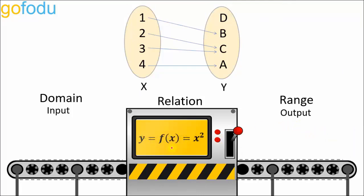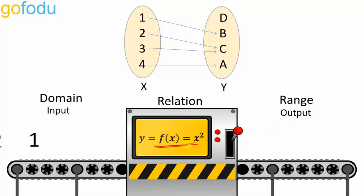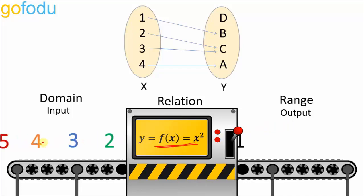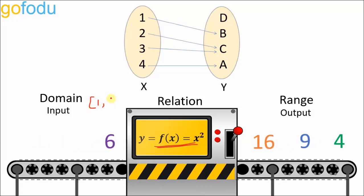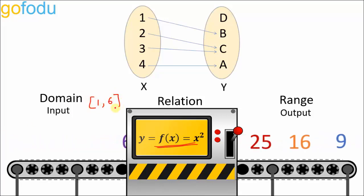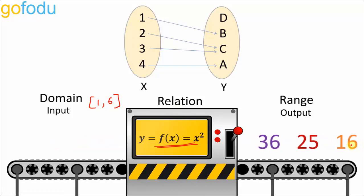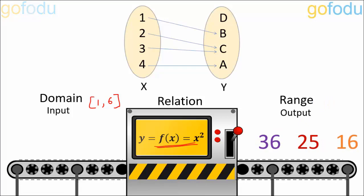Take another example: the function f(x) = x². For this function, values 1, 2, 3, 4, 5, and 6 form the domain. And the corresponding output values 1, 4, 9, 16, 25, and 36 constitute the range of the function.